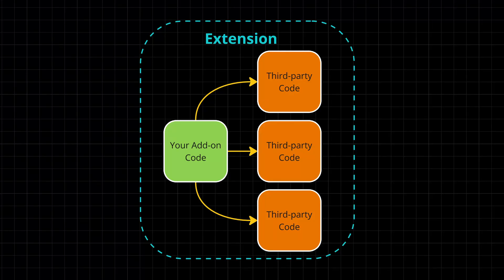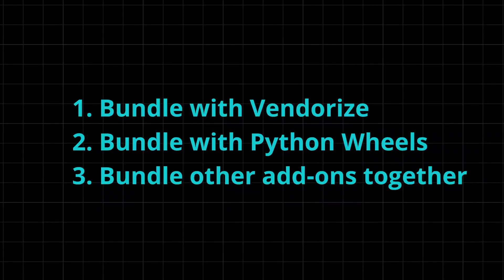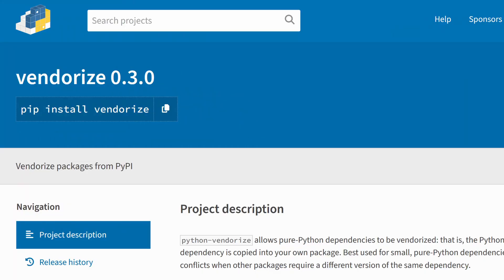One of the main requirements of an extension is that it needs to be self-contained, meaning that all the code your add-on needs must be packaged with it — just like packing for a trip to a very remote location. This is the biggest change add-on developers would need to make if they depend on third-party Python packages. The Blender developers have outlined three main ways to package third-party code, one of which is using the vendoring Python package, which is able to pack small pure Python dependencies with your add-on.